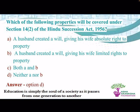Which of the following properties will be covered under section 14 subsection 2 of Hindu Succession Act 1956? A. A husband created a will giving his wife absolute right to property. B. A husband created a will giving his wife limited rights to property. C. Both A and B. D. Neither A nor B. The correct answer is D, neither A nor B, because the Hindu Succession Act does not cover transfer of property done through a will — it only covers non-testamentary transfers.